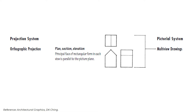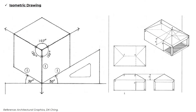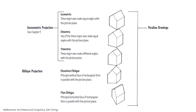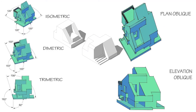In orthographic projections, each principal face of a rectangular form in each view is parallel to the picture plane. We have the plan, the section, and the elevation. In axonometric projection, you have your isometric, where three major axes make equal angles with the picture plane. Dimetric, where two of the three major axes make equal angles with the picture plane. And in trimetric, three major axes make different angles with the picture plane. We also have oblique projection: elevation oblique, where the principal vertical face is parallel to the picture plane, and plan oblique, where the principal horizontal face is parallel to the picture plane.